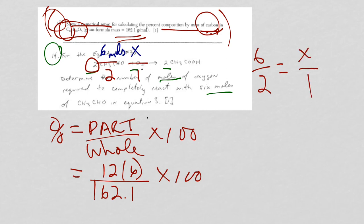Solve for X. Well, 2X is equal to 6. Divide both sides by 2. And the answer is 3.